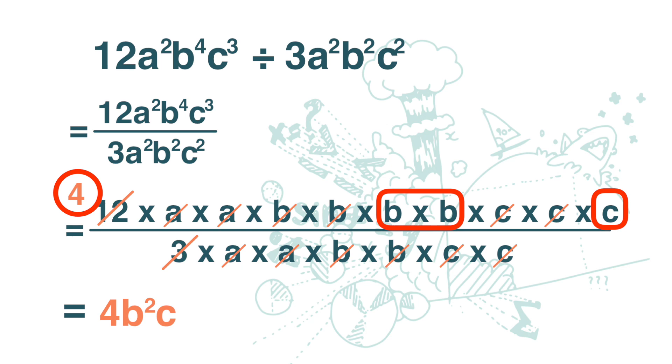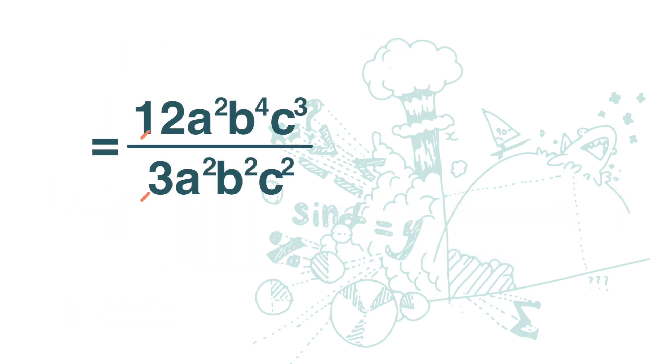We can also do it in a faster way. First we simplify 12 over 3. 12 divided by 3 is 4. 3 divided by 3 is 1.